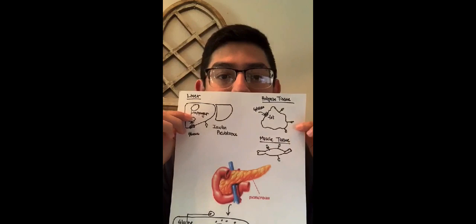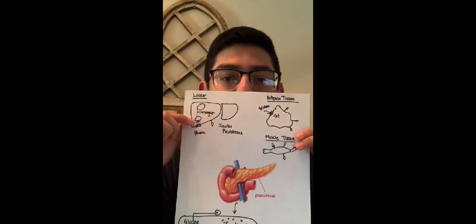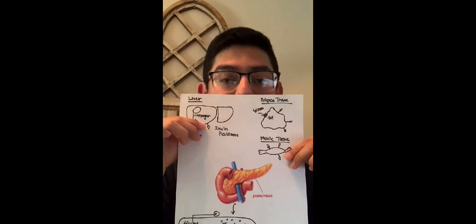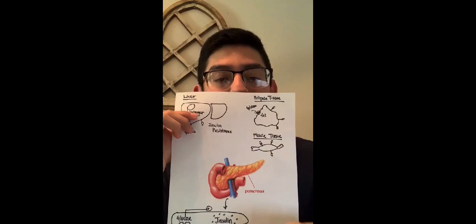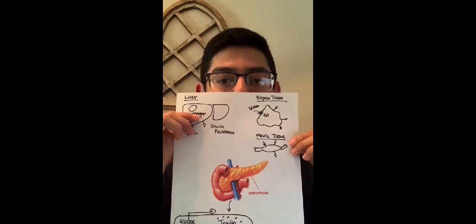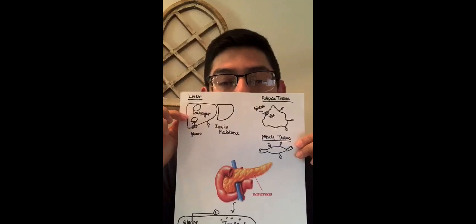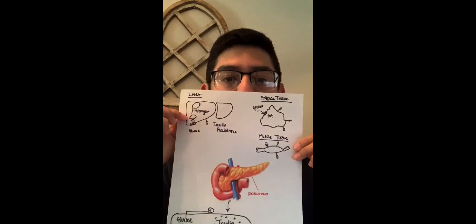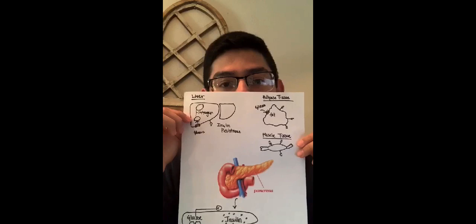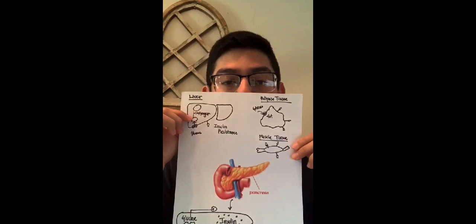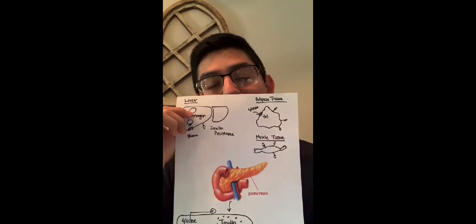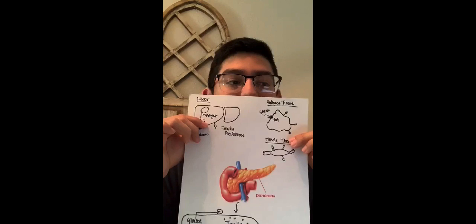I also drew some organs and tissues — the liver, adipose tissue, and muscle tissue. These have receptors on them that help lower blood glucose levels by accepting insulin. Insulin attaches to these receptors with the purpose of reducing the amount of glucose in the body. Within the liver, insulin helps promote the storage of glucose through glycogenesis and glycogen. It also helps promote storage of glucose as fat, which is released in the form of adipose tissue.